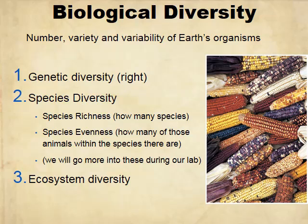Next, we're talking about biodiversity, or biological diversity. We have three levels, starting with the smallest: genetic — the differences in genetics. Then species diversity, which includes richness (how many species) and evenness (how many individuals within each species). We'll go into more detail during the parking lot diversity lab. The last level is ecosystem diversity — the differences between ecosystems, like rainforest versus desert.